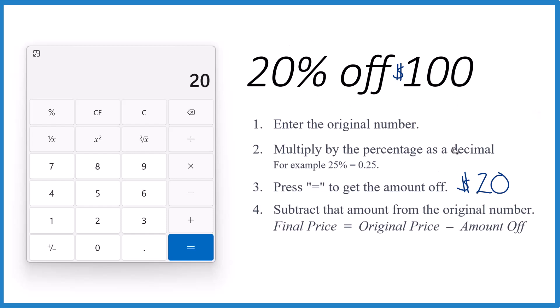But now if we want the final price, 20% off of 100, what we end up with as our final price, we take the original amount, that's the 100, and then we subtract the amount off, that's the 20 there. And when you do that, you get 80.